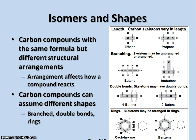Carbon compounds can have the same formula but be shaped or arranged differently — those are called isomers. The arrangement of atoms in an isomer affects how the compound reacts. For example, you've got two different kinds of butane: one is an unbranched chain, and the other is a branched chain that still has four carbons. The molecular formula is the same, but the branched one is called isobutane because of the way the molecules are arranged.